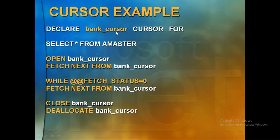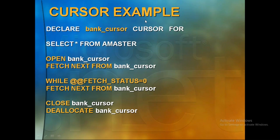To declare a cursor: DECLARE bank_cursor CURSOR FOR SELECT * FROM account_master. You declare variables and populate them. You open the cursor and get one row at a time. The WHILE @@FETCH_STATUS = 0 loop keeps fetching row by row until all data is read. Then close the cursor and deallocate it. Make sure you do not write the @ symbol on the cursor name itself.